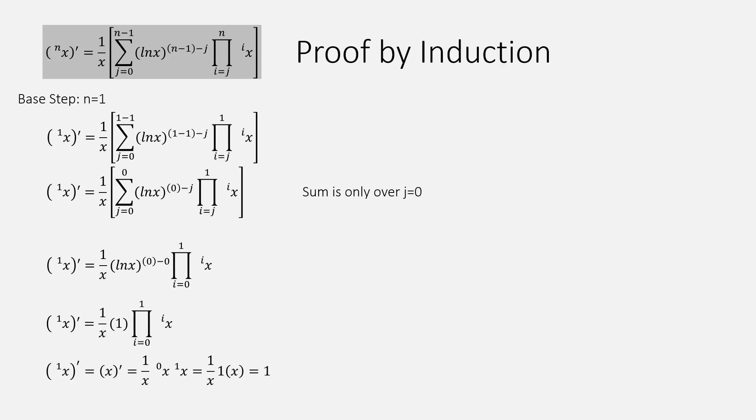And the product where the index i goes from 0 to 1 is written explicitly in this expression. The derivative of the first tetration of x is just x prime, which equals 1 over x times the product of the 0th and first tetrations of x. But the 0th tetration of x is 1, and the first is x. And so everything cancels to equal 1, which is x prime. And so the base case is proven.